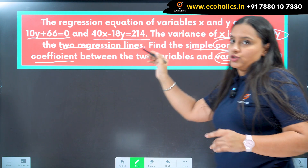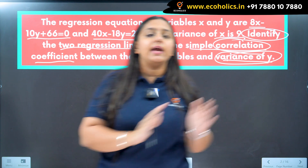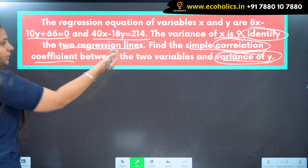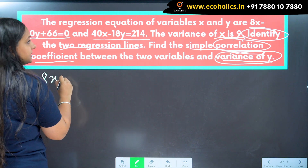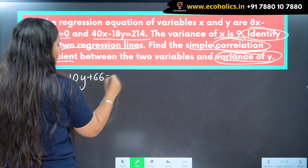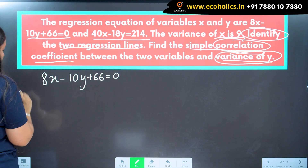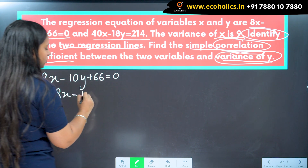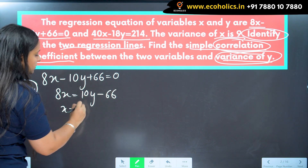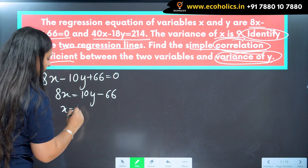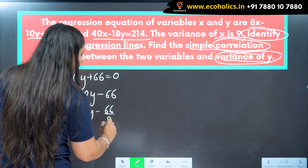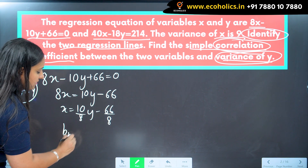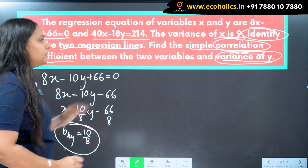We are given two linear equations and must identify whether each represents X on Y or Y on X. Taking the first equation — 8X minus 10Y plus 66 equals 0 — if I believe this is X on Y, I transform it in terms of Y: 8X equals 10Y minus 66, giving X equals (10/8)Y minus 66/8. So the slope estimator of X on Y is 10/8.